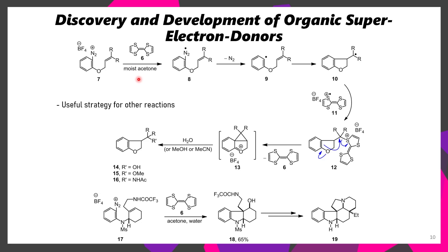Now depending on how many equivalents of compound 6 you use and depending on what the substrate is, you might end up fully oxidizing this to the dication, but this can be converted to the monocation as it reduces something such as this diazonium. So this aryl diazonium can be reduced to the corresponding diazo radical, which can eliminate nitrogen forming the corresponding aryl radical.